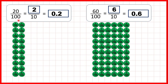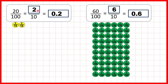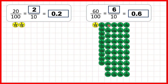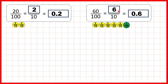We can also show what we've done using place value counters. For the first question we started with 20 hundredths, but remember 10 hundredths can be exchanged for 1 tenth — that gives us 2 tenths, or 0.2 as a decimal. Then we had 60 hundredths, but 10 hundredths can be exchanged for 1 tenth. So when we've exchanged all of our hundredths for tenths we get 6 tenths, which can be written as 0.6.